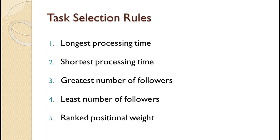As a reminder, the 5 common task selection rules are: 1. Longest processing time. 2. Shortest processing time. 3. Greatest number of followers. 4. Least number of followers. 5. Ranked positional weight — sometimes called greatest positional weight. Note that one or more rules are assigned at the beginning of the problem, and the same rules in the same order are used whenever there is more than one task that can be assigned.